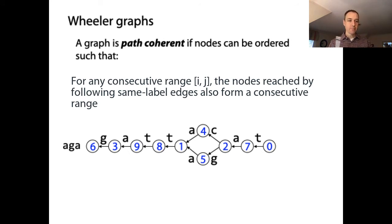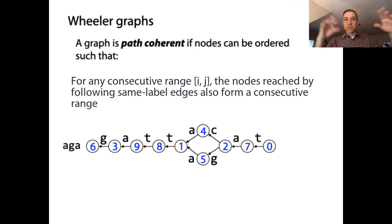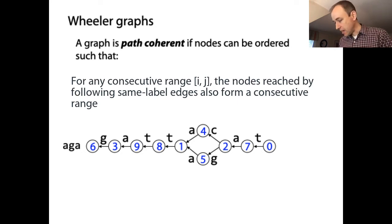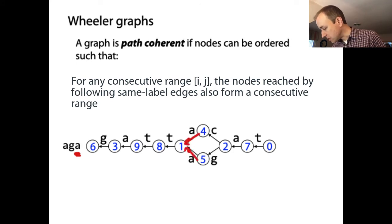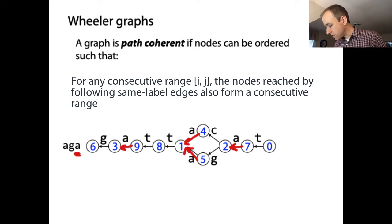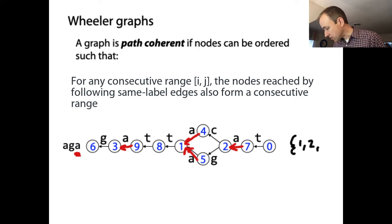Given this graph, if we start by letting the active nodes be all the nodes and then follow all the edges labeled 'a' — since 'a' is the shortest non-empty suffix of our pattern — we follow this edge, and this edge, and this edge, and this edge. The set of nodes we arrive at are one, two, and three, and they're consecutive.